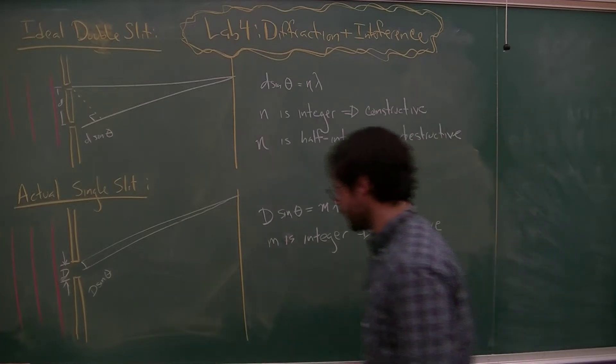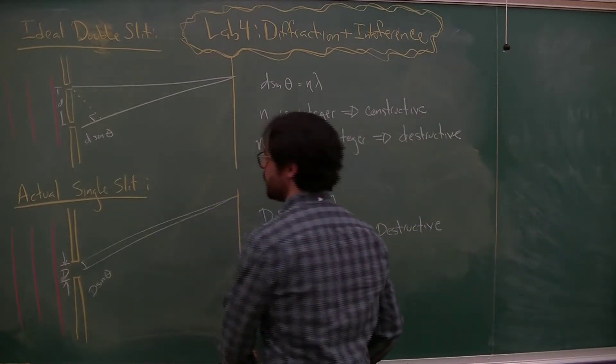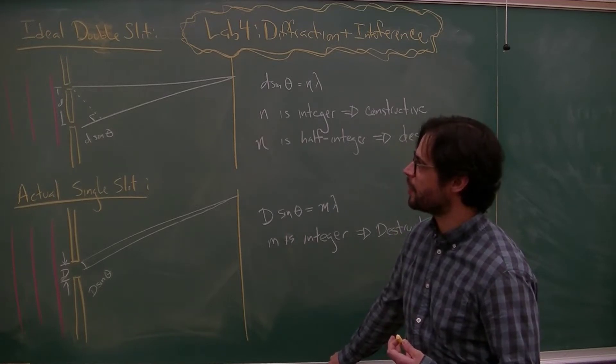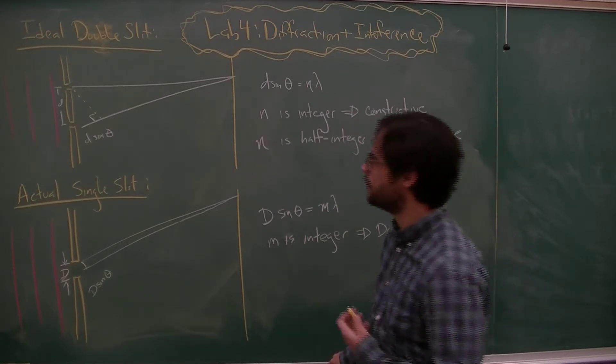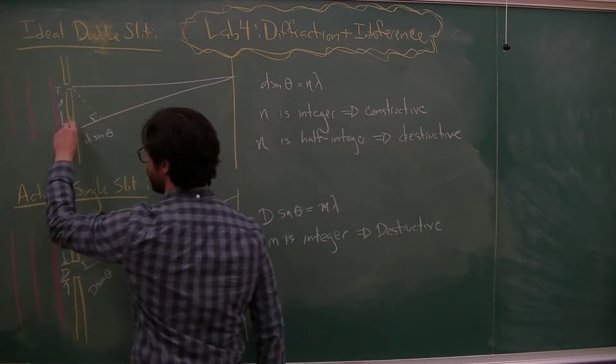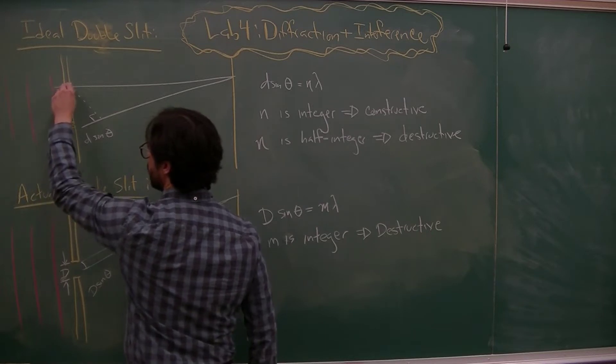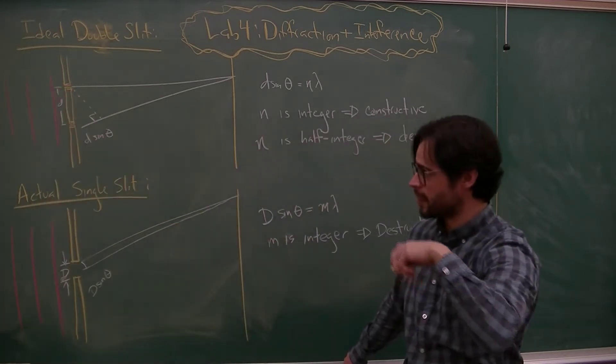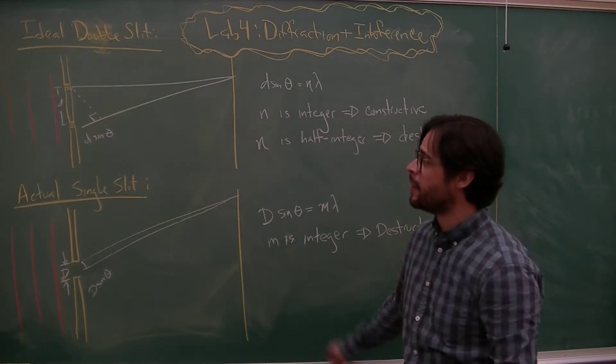So really quickly, so that you know what some of these d's and theta mean, this is kind of the progression that you'll go through in lecture as well. So first we'll be introduced to the ideal double slit. And these ideal double slits are infinitely small, the tiniest number that is possibly imaginable of light through these infinitely small slits.